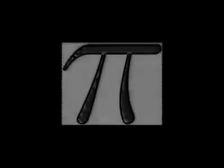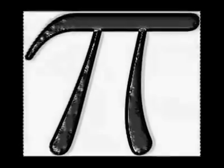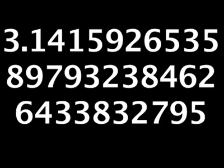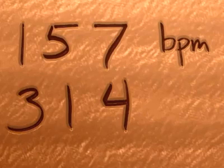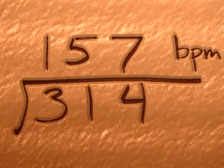The following is a musical interpretation of Pi to 31 decimal places at a tempo of 157 beats per minute, which is incidentally 314 divided by 2.